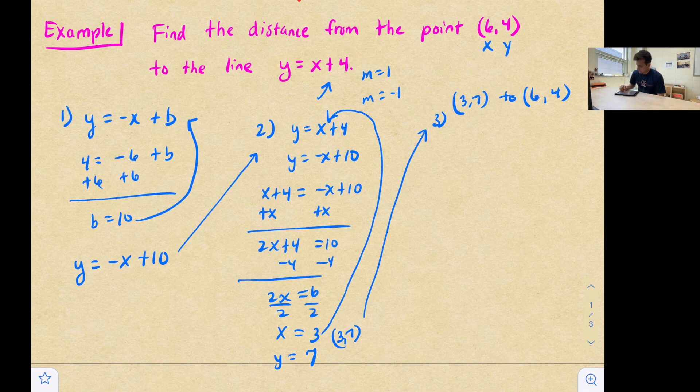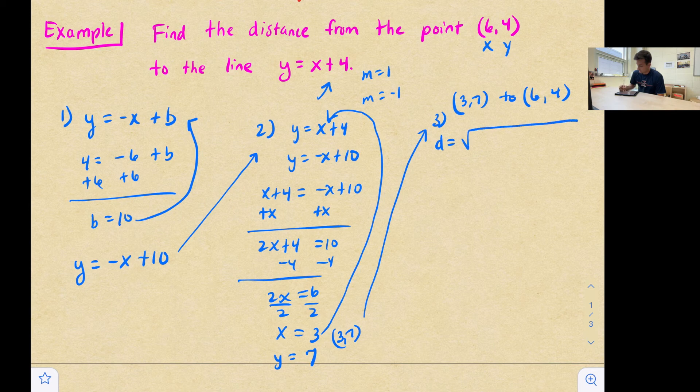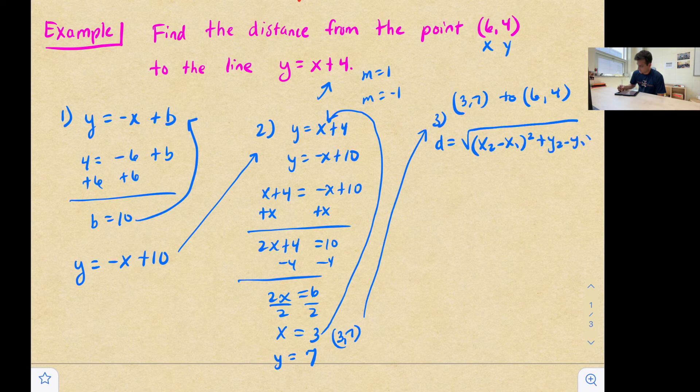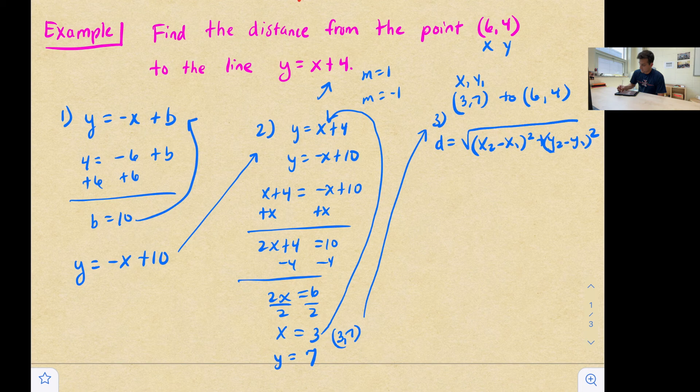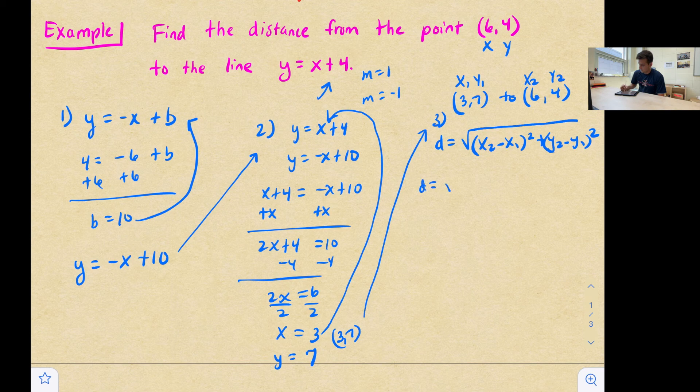Okay. So now our distance formula, we say distance is equal to the square root of x sub two minus x sub one squared plus y sub two minus y sub one squared. So we'll call this x sub one and y sub one, or the x coordinate and y coordinate of our first point, x sub two, y sub two. So we'll plug these values in.